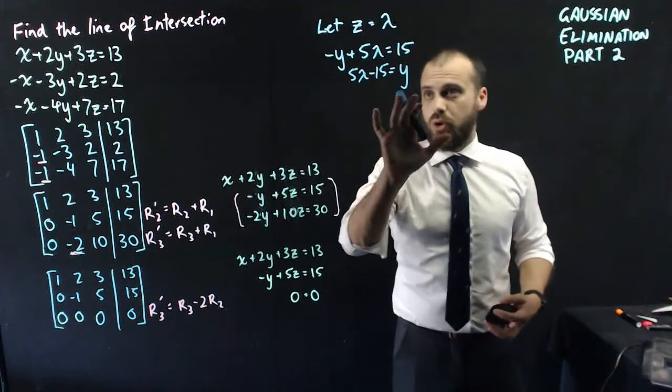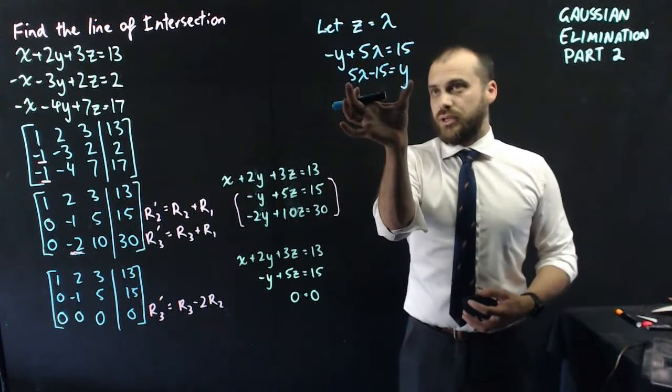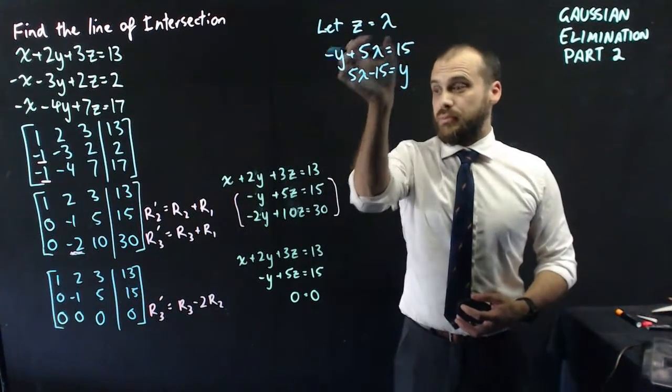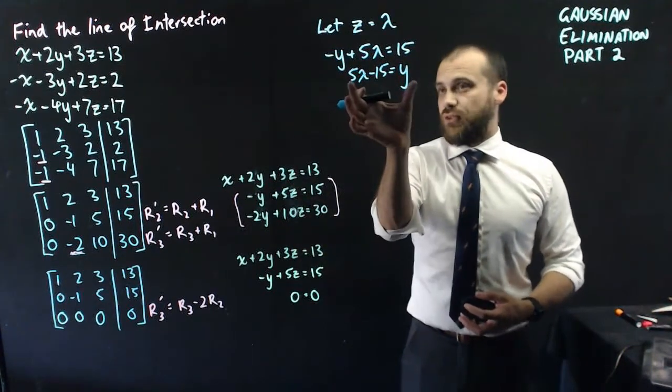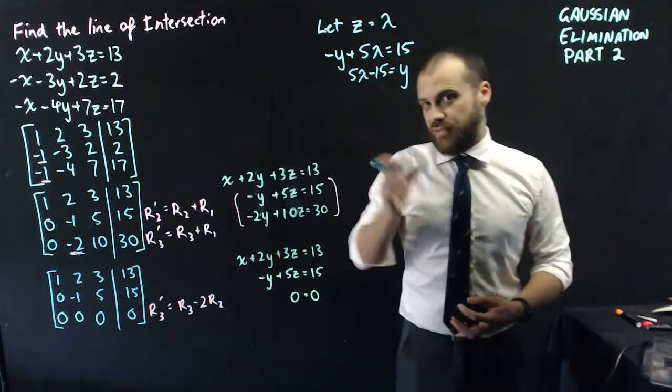So let's sub lambda into that. Now when I do that, I get y equals five lambda minus fifteen. So now I have a y value.